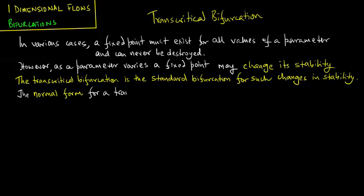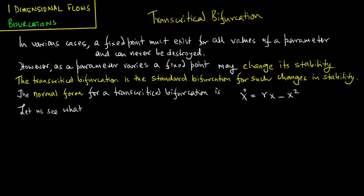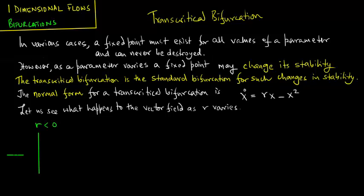The normal form for a transcritical bifurcation is x̊ = rx - x². Let us see what happens to the vector field as r varies. For r less than 0, we plot x̊ versus x.